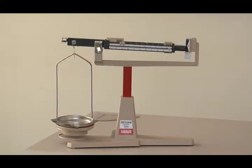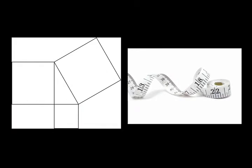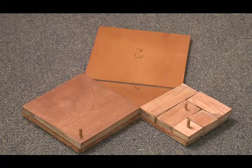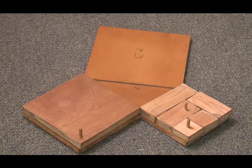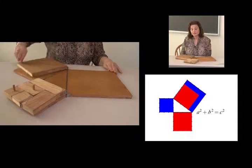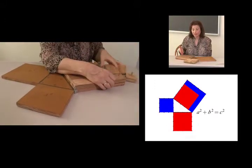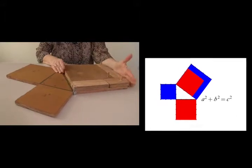How could we prove this? There's many different ways. We could cut out the squares and weigh them. We could measure the lengths of the sides and calculate the areas of the squares. Or we could think of it like a puzzle and rearrange the pieces to show how the areas are equal. This wooden puzzle, made by a former student, illustrates how we can rearrange the pieces with an area of A squared and the piece with an area of B squared to show that they equal C squared.